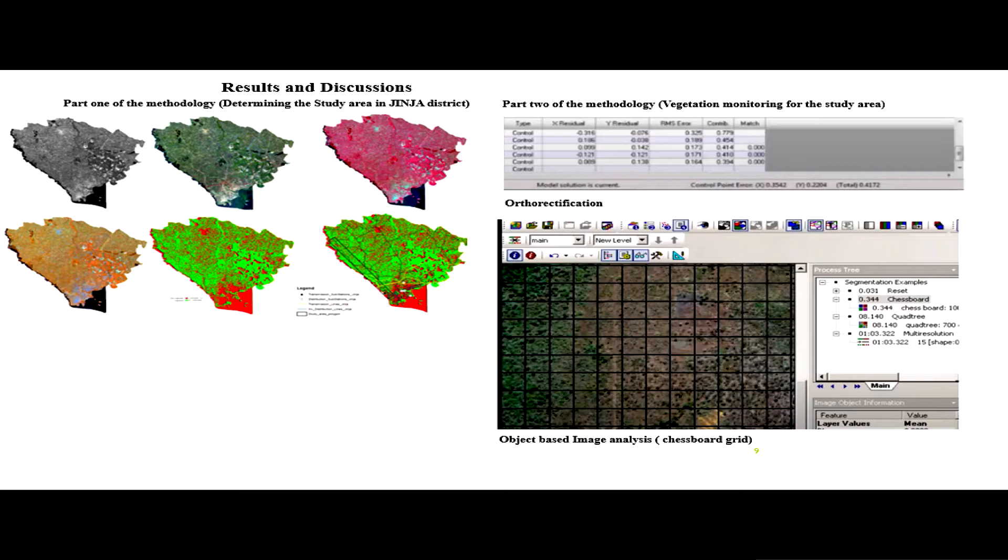Part one of the methodology: the first is the Landsat 7 raster data that has been destriped, then true color composite, then false color composite 4-3-2, another false color composite 4-5-3, and the NDVI dataset.